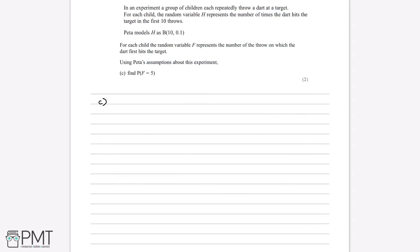For each child, the random variable F represents the number of the throw on which the dart first hits the target. Using Peter's assumptions, Part C asks us to find P(F = 5). This is essentially asking for the probability that the child first hits the target on their fifth throw, which implies they miss on their first, second, third, and fourth throws, then hit on the fifth.